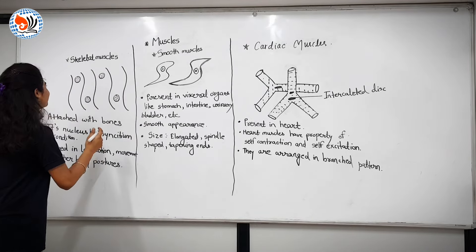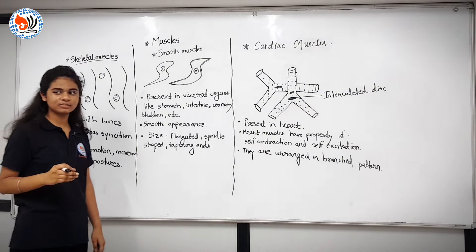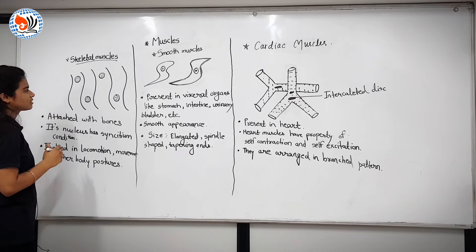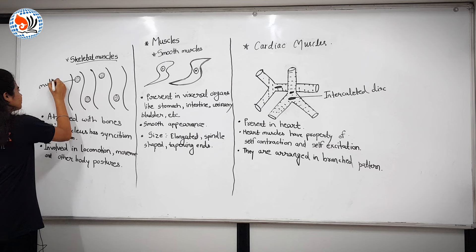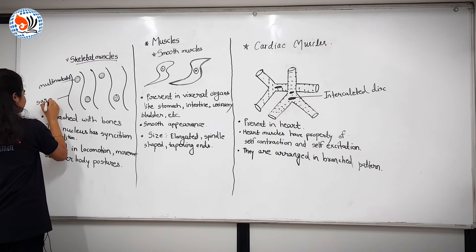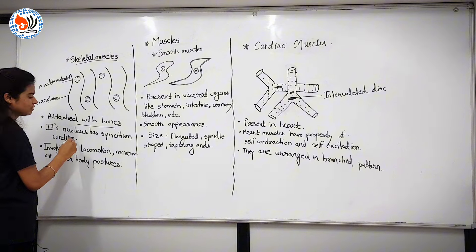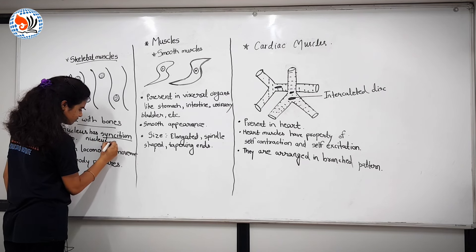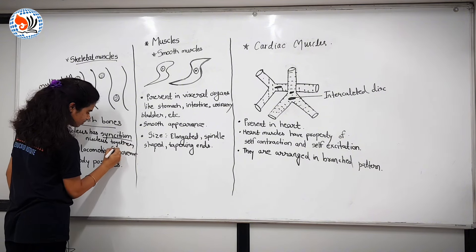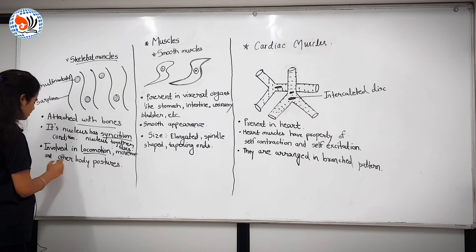Now we will take three muscles. First, skeletal muscles. Skeletal muscles are voluntary muscles and they are striated muscles. Skeletal muscle structure is multinucleated. Skeletal muscles are attached with the bones and its nucleus lies in peripheral position. They are involved in motion, movement and other body postures.